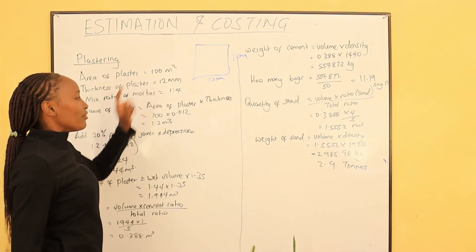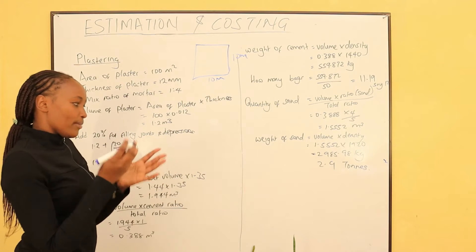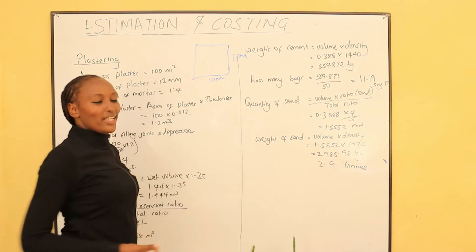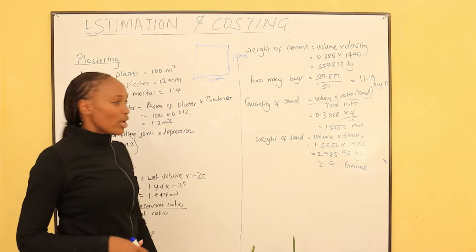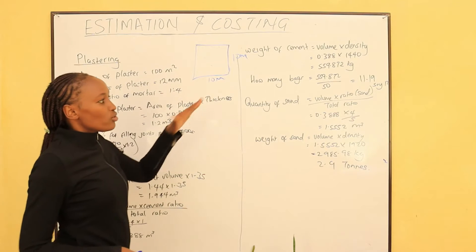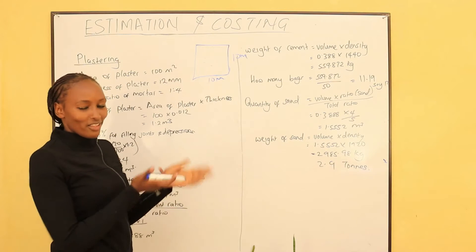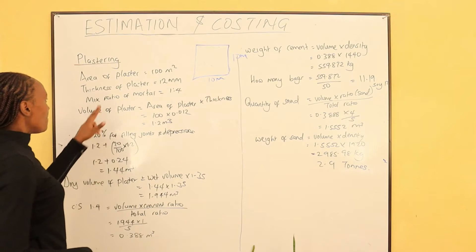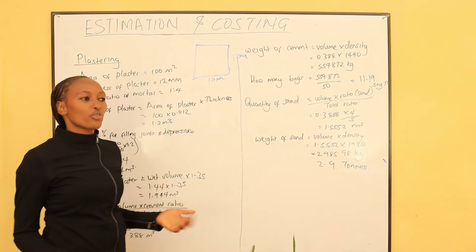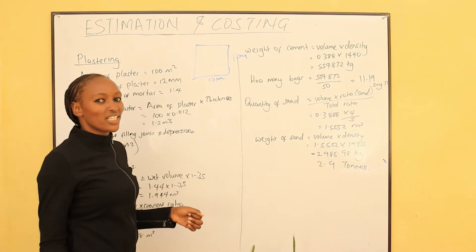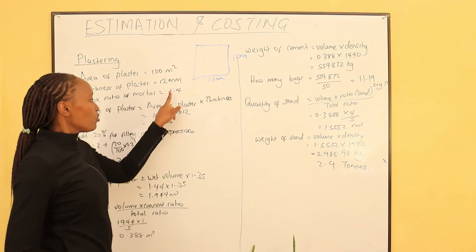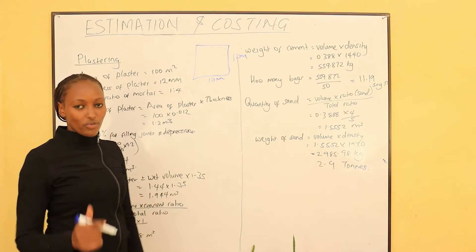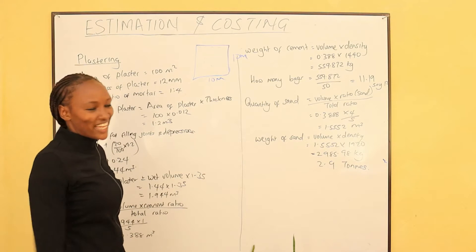So we want to know what is the quantity of cement and sand we shall use in plastering. The thickness of plaster — from the block to the surface — is 12 millimeters. That's the thickness: 12 millimeters, which is 1.2 centimeters. Mix ratio for mortar — the mortar that we shall use — mortar is the mix between cement and sand. The mortar we shall use is 1 ratio 1 is to 4: one volume of cement goes with 4 volumes of sand.